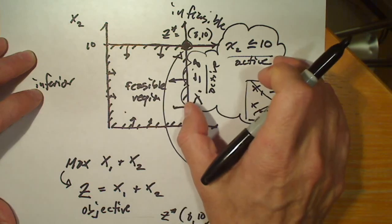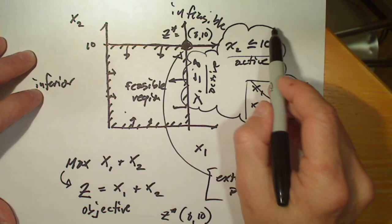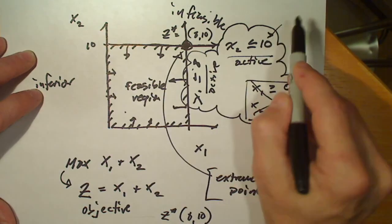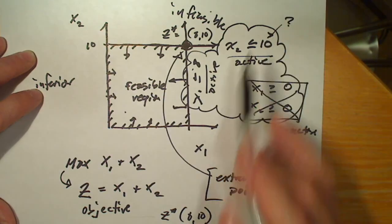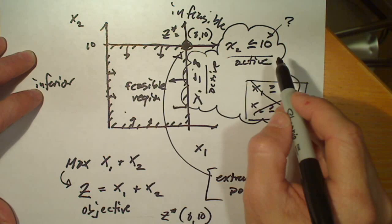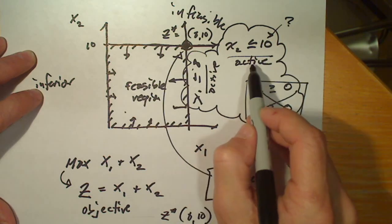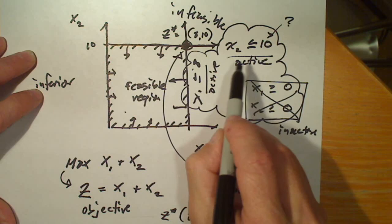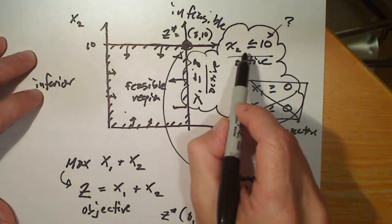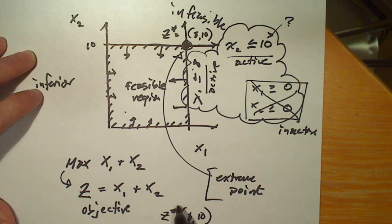One way to think about active constraints is: if we were to change the constraint, then the optimum solution would change. The definition of an active constraint is that it is satisfied as an equality at the optimal solution z-star.